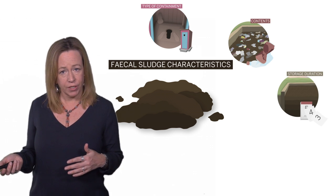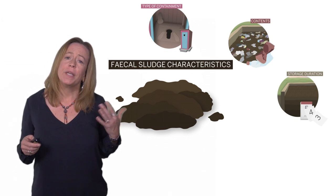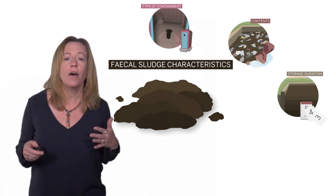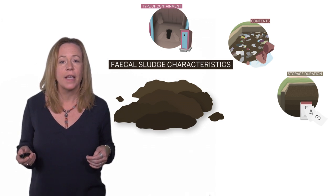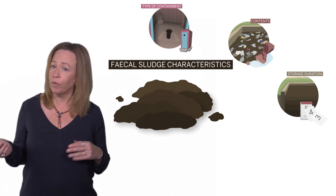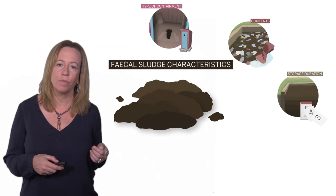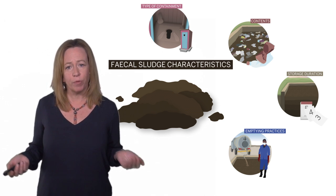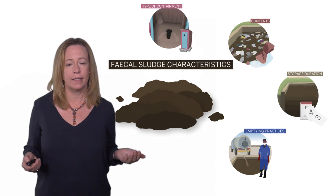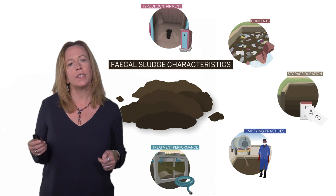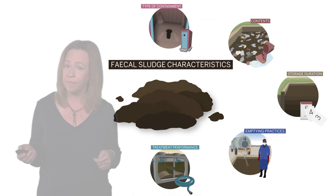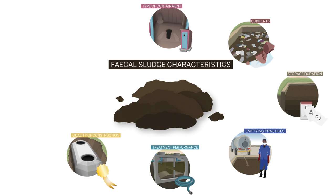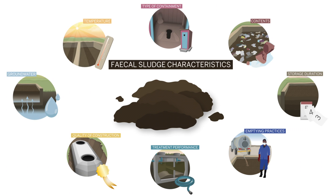The emptying frequency affects the level of stabilization. For example, public toilets or commercial buildings may be emptied as frequently as daily to weekly, in contrast to systems with emptying frequencies of years. This means fecal sludge can range from fresh or raw to partially stabilized, due to storage duration. How it was emptied also matters — was it fully or partially emptied, and was water added to help remove the sludge? These are emptying practices. Characteristics are also affected by whether technologies are performing as designed (treatment performance), how well they were constructed, whether they are lined or unlined, whether they are watertight (quality of construction), infiltration or inflow from groundwater, and temperature, which affects rates of degradation.